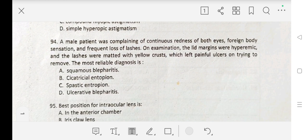Question number 94 is: A male patient was complaining of continuous redness of both eyes, foreign body sensation and frequent loss of lashes. On examination, the lid margins were hyperemic and the lashes were matted with yellow crust which left painful ulcers on trying to remove. The most reliable diagnosis is A. squamous blepharitis, B. bacterial entropion, C. spastic entropion, D. ulcerative blepharitis. Our correct answer is D. ulcerative blepharitis.